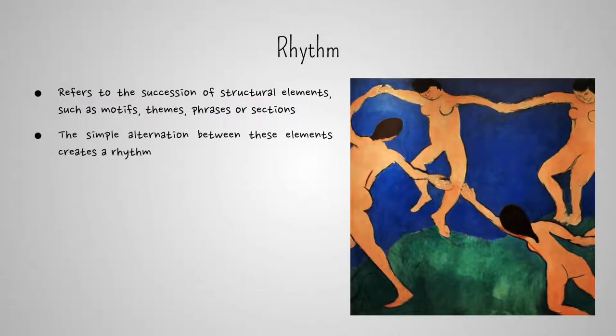The simple alternation between these elements creates a rhythm, which, depending on the complexity of the work, can be perceived during the listening process or after it has occurred, when the brain, in its attempt to make sense of the musical experience, creates an image of the work as a complete entity.